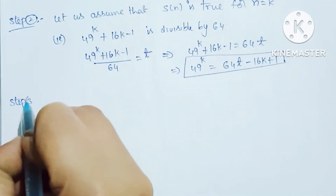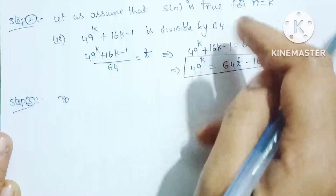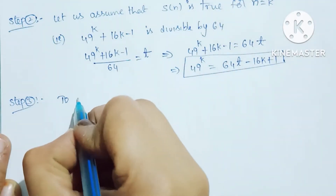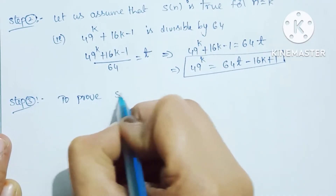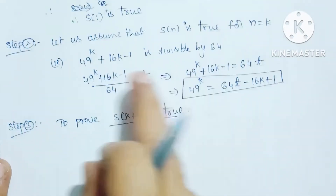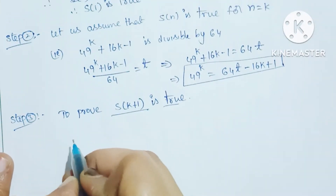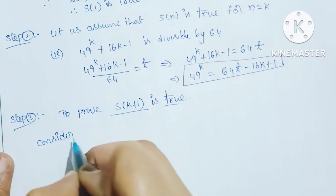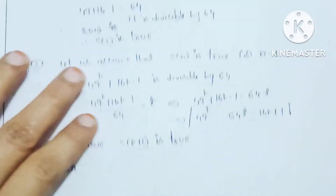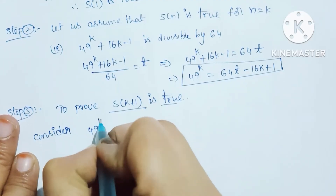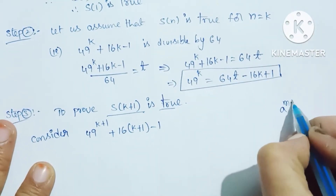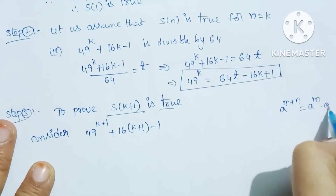Step 3: we need to prove S(k+1) is true. If S(k) is true then S(k+1) must follow. Substituting n = k+1: we need to show 49 power (k+1) plus 16(k+1) minus 1 equals 64 times something. Using the rule a power (m+n) = a power m into a power n.